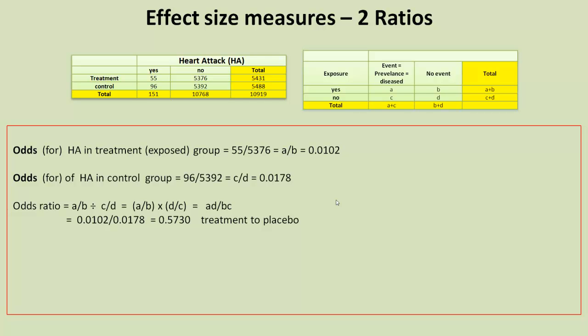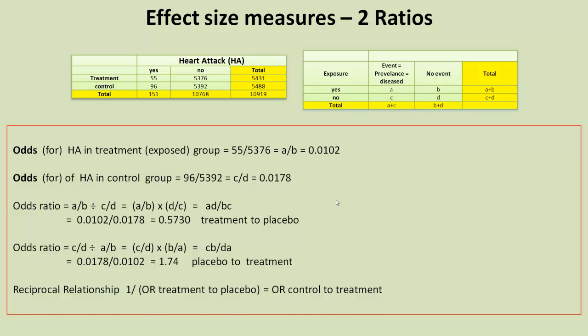We have what's called the odds ratio. And the odds ratio of treatment to placebo is 0.573. And the odds ratio in the other direction, the placebo to treatment group, is 1.74. How can we interpret these values? Well, let's have a look.